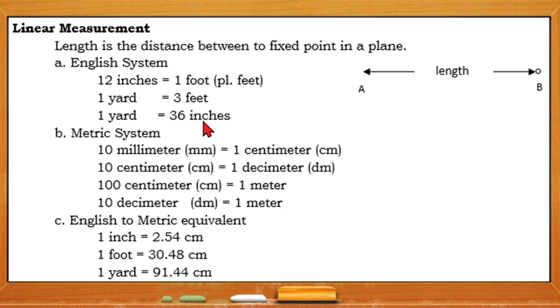In the metric system, we have 10 millimeter equals one centimeter. We could call this one as metric slash SI system. Then 10 centimeter equals one decimeter, 100 centimeter equals one meter, 10 decimeter equals one meter, and we could also say that one meter equals 1000 millimeter. For English to metric conversion, one inch equals 2.54 cm, one foot equals 30.48 cm, and one yard equals 91.44 centimeter.